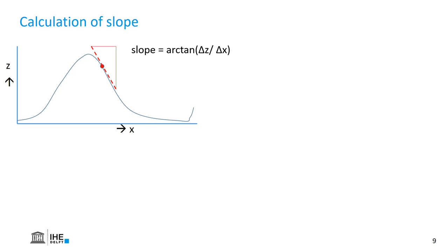You can imagine with this equation that if the x-coordinates are in degrees and the z-coordinates in meters, the software will still calculate the slope by applying this equation, but the result does not make sense. The z units need to be the same as the x and the y units.